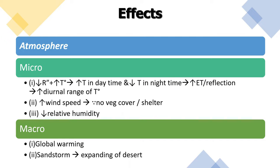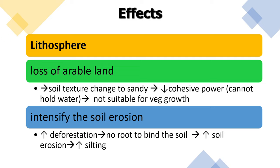At the macro level, there are two effects. First is global warming due to increasing temperatures. The second impact is sandstorms, which increase the extension of deserts.